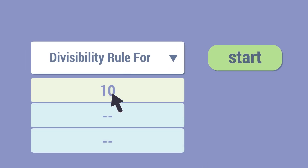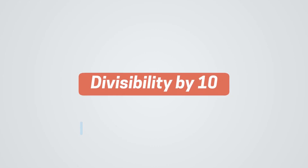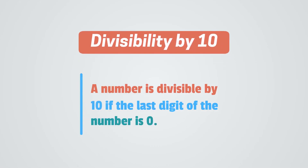Here is the divisibility rule for 10. A number is divisible by 10 if the last digit of the number is equal to 0.